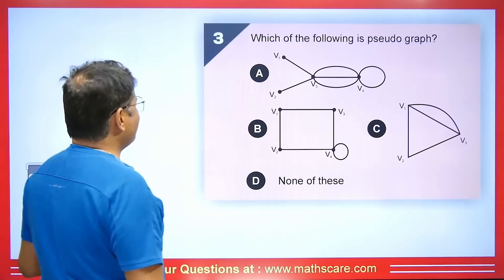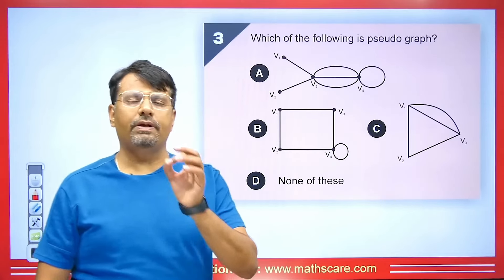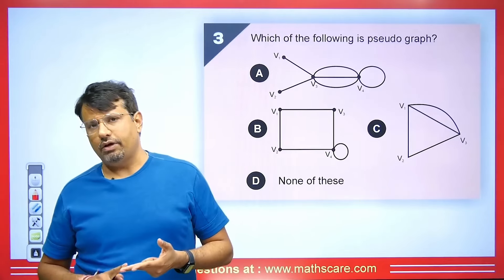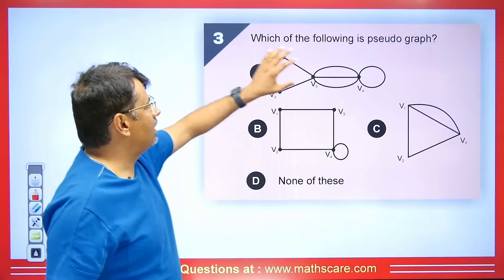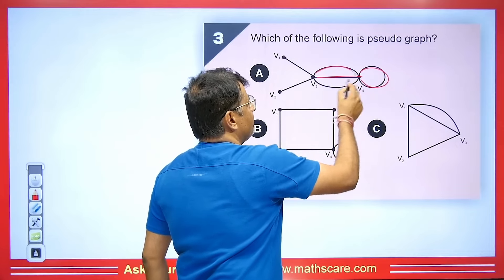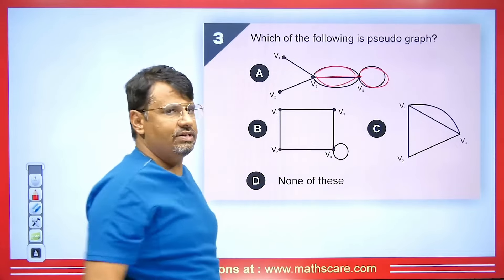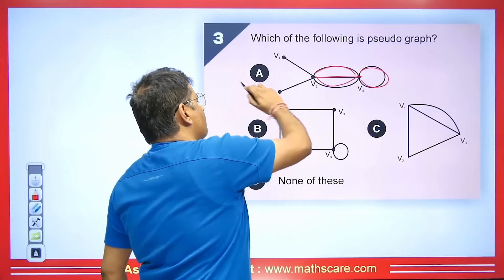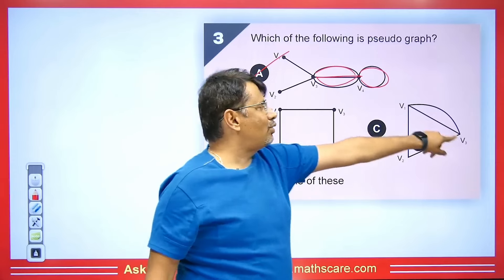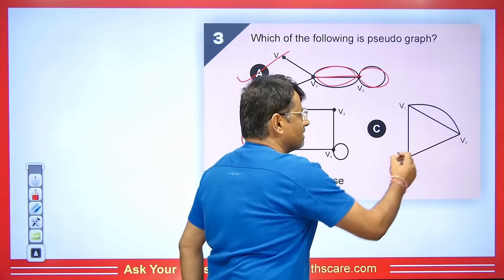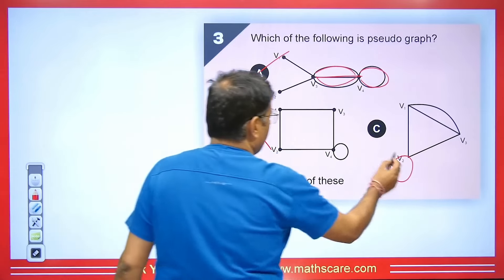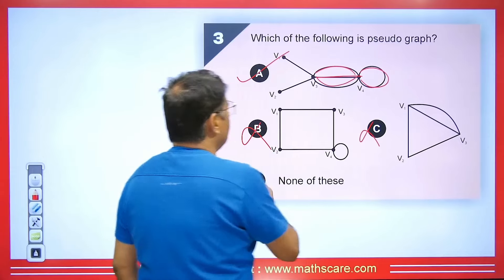The next question asks which of the following is a pseudograph. A pseudograph is a graph with both multi-edges and self-loop. Looking at the options: the first graph has a self-loop and also a multi-edge — more than one edge connecting two vertices — so this is a pseudograph. Another option has a self-loop but no multi-edge, so it is not. Another has multi-edges but no self-loop, so it is also not a pseudograph. The correct option is the one with both.